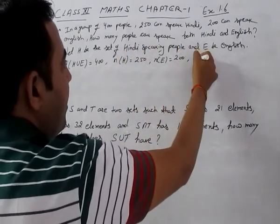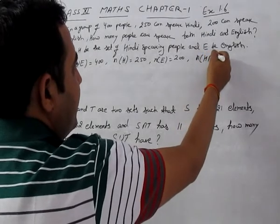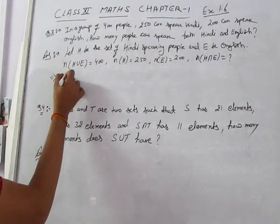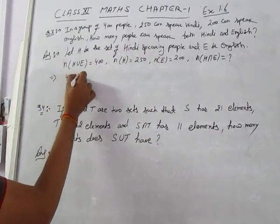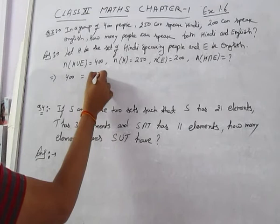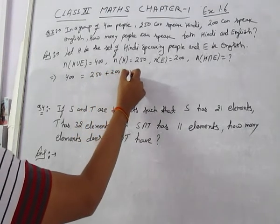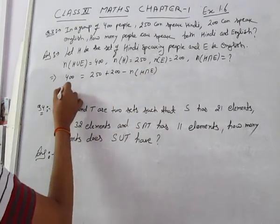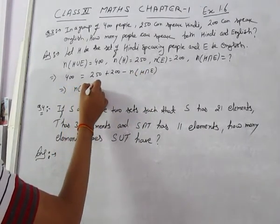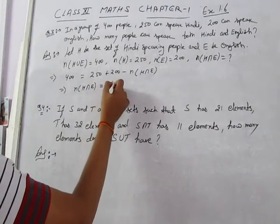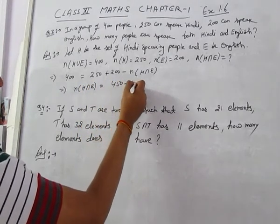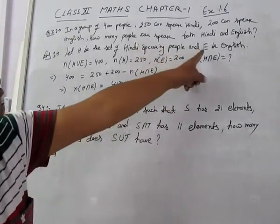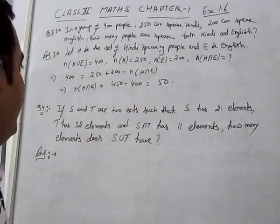Applying the formula: 400 = 250 + 200 - n(H∩E). The number of elements in H intersection E is equal to 450 - 400, which is 50. Therefore, 50 people can speak both Hindi and English.